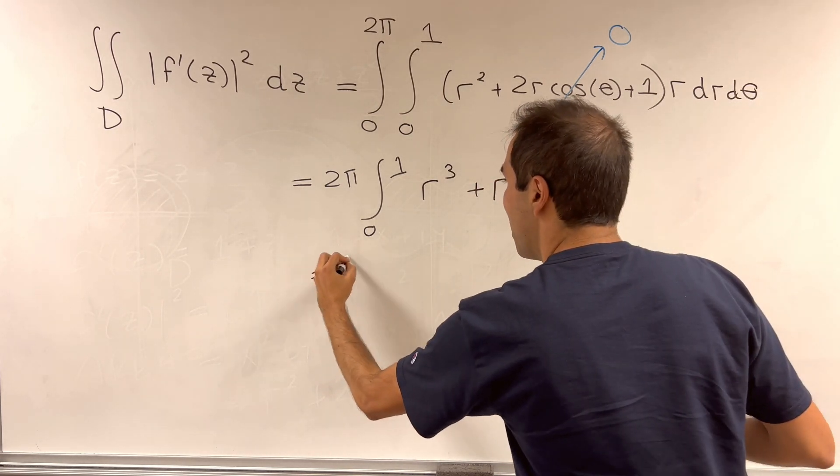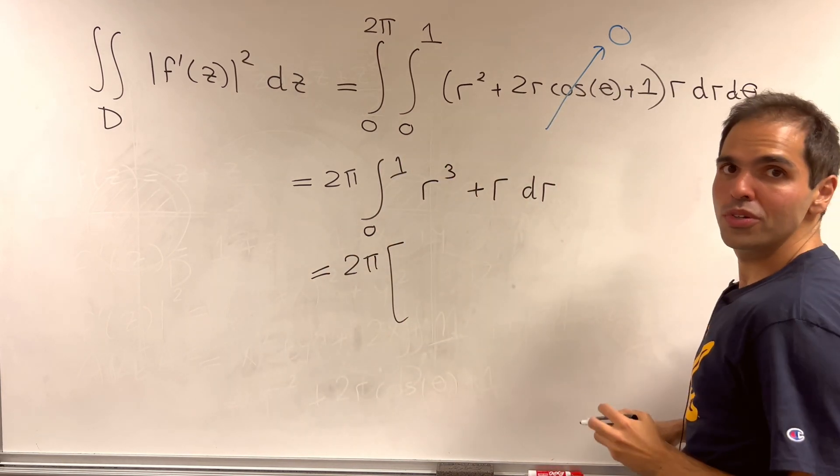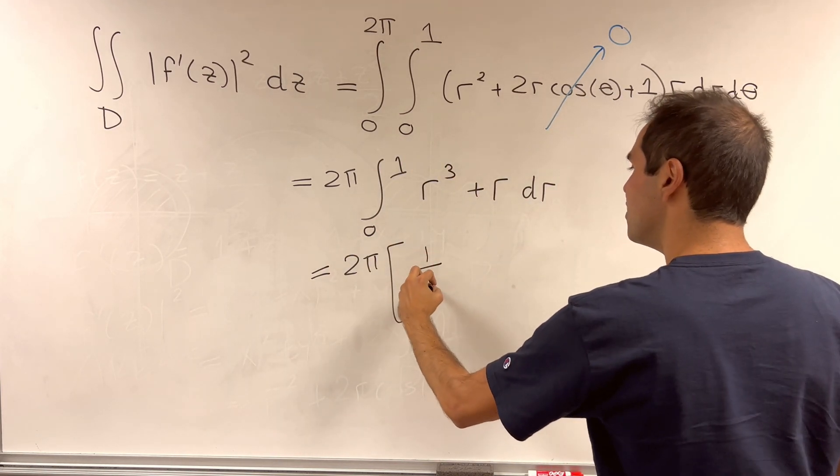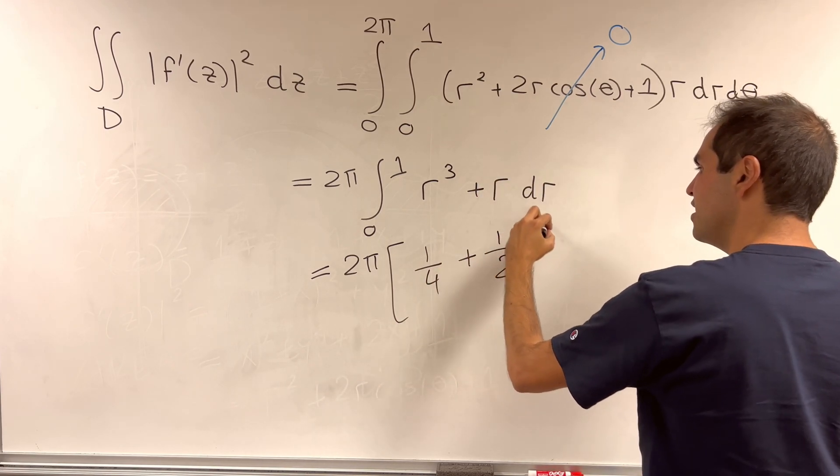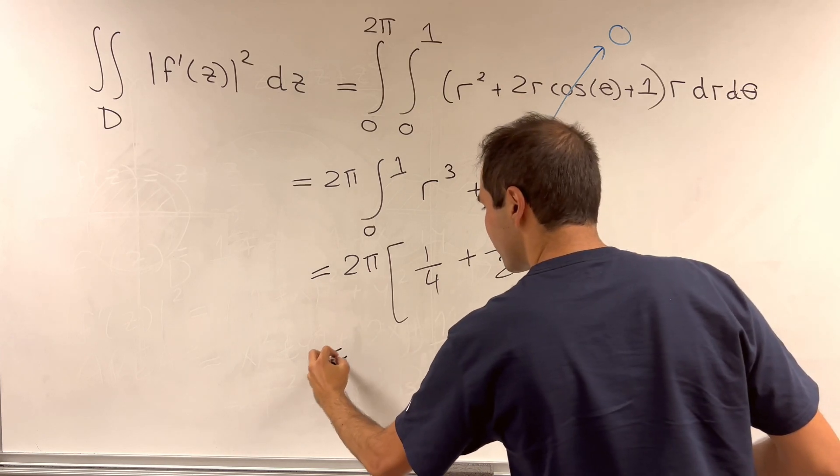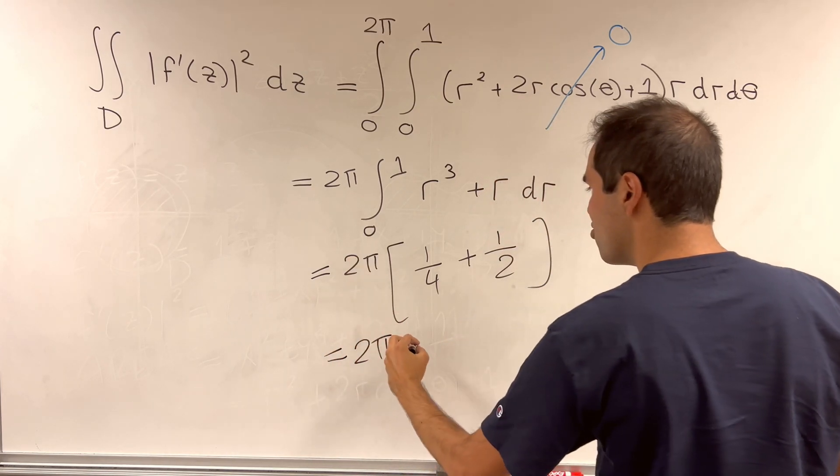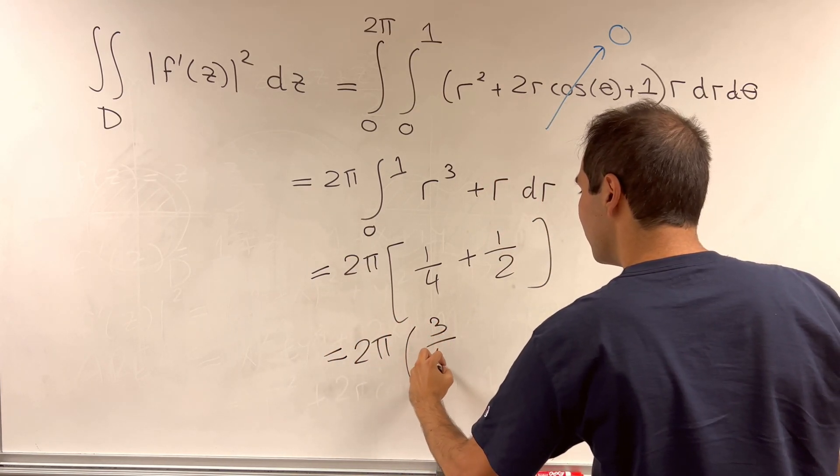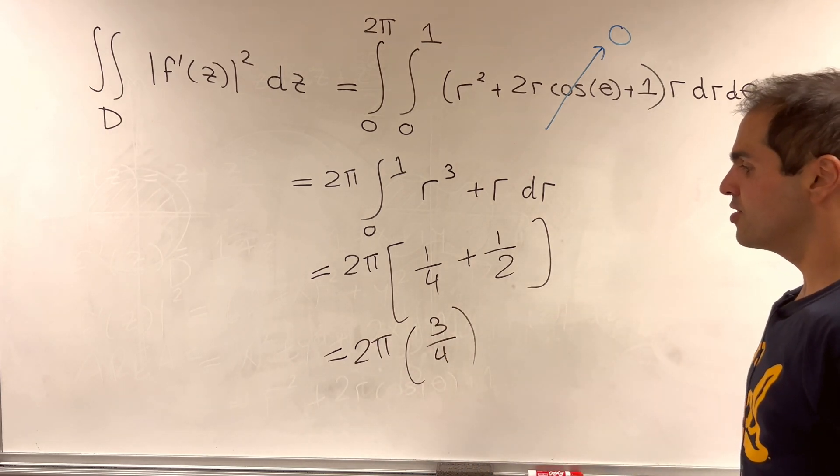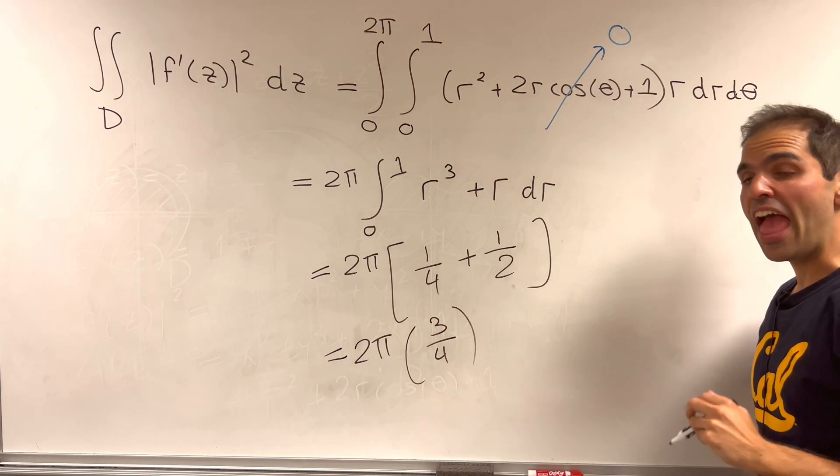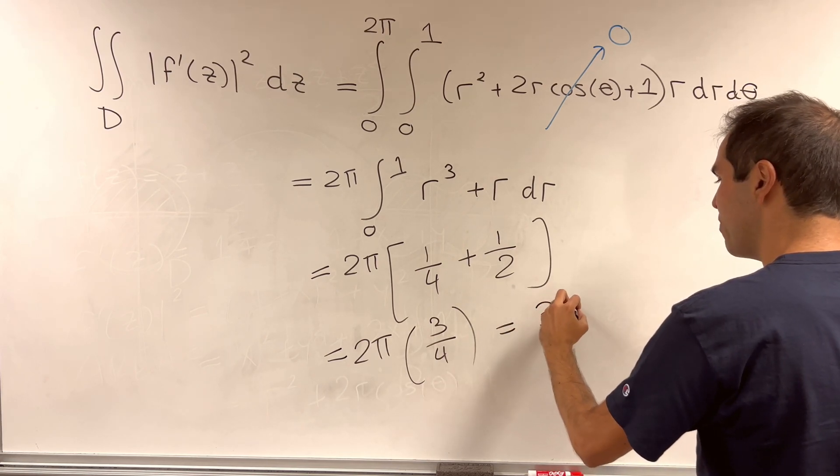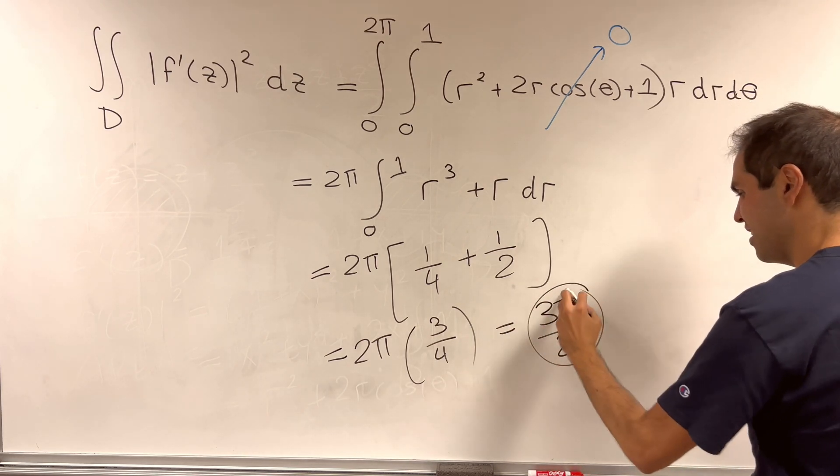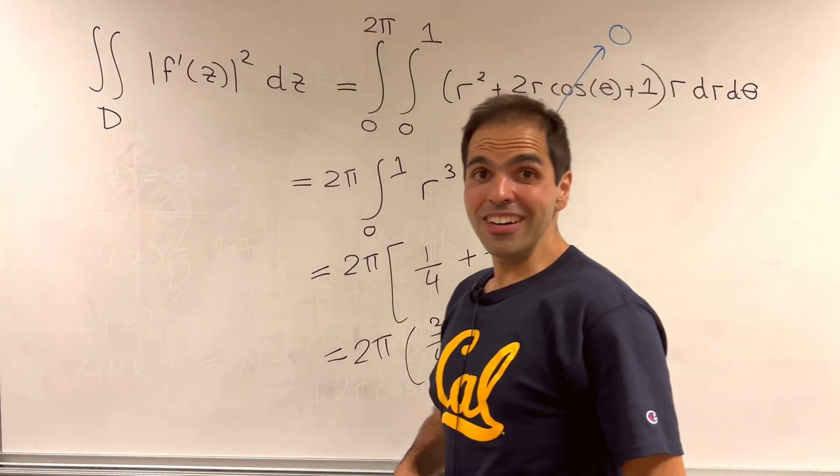And an antiderivative of r cubed is r to the fourth over 4. So we get 1 fourth, r squared over 2, that gives us 1 half. And then 1 fourth plus 1 half, that is 3 quarters. So in the end, the area of the Neumann oval is just 3 pi over 2. How neat is that?